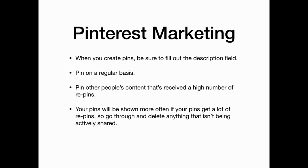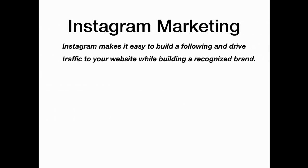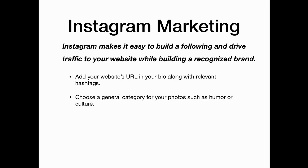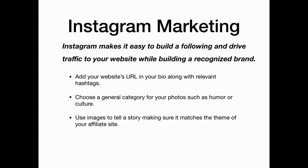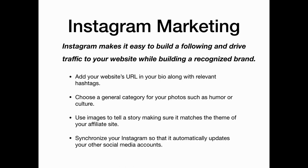Remember your pins will be shown more often if they get a lot of repins, so go through and delete anything that isn't being actively shared. Instagram makes it easy to build a following and drive traffic to your website while building a recognized brand. Start by adding your website's URL in your bio along with relevant hashtags. Choose a general category for your photos such as humor or culture, and use images to tell a story — making sure it matches the theme of your affiliate site. Then synchronize your Instagram account so that it automatically updates your other social media accounts.